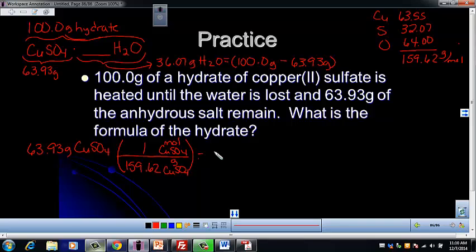So we know that one mole has a mass of 159.62 grams. And when you put that in your calculator, which you should do at this point, you should get 0.401 moles of CuSO4. And don't worry about sig figs at this point. We'll deal with that.